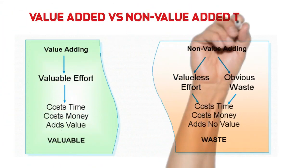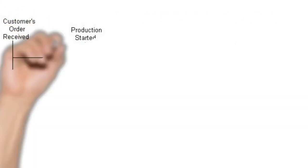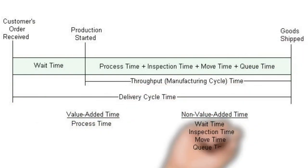Value-added time refers to the processes and activities in the production or manufacturing process that improve the product or add usefulness to it. Non-value-added time is any time spent on a step in that process that adds nothing to the finished product. Only one of these four activities adds value to the product: process time is the value-added activity. The other three — inspection, moving, and queuing — add no value and should be eliminated as much as possible.